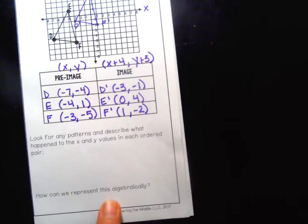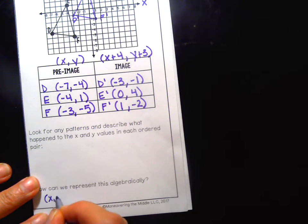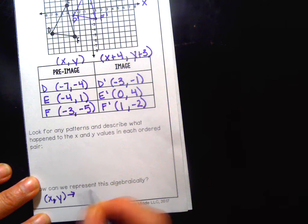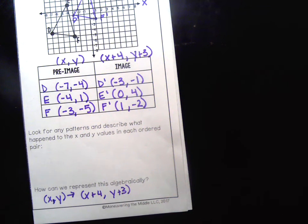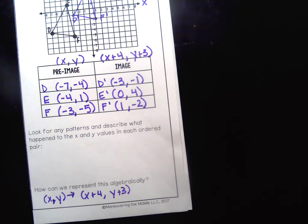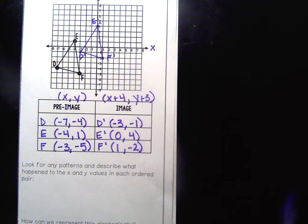And again, my algebraic rule is my original x, y turns into x plus four, y plus three. That's the algebraic rule. There you guys go, a second example for actually plotting an image from a pre-image.